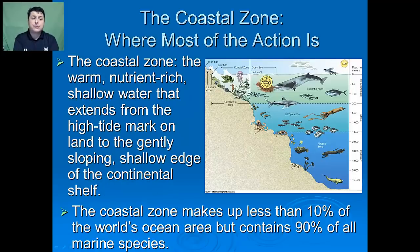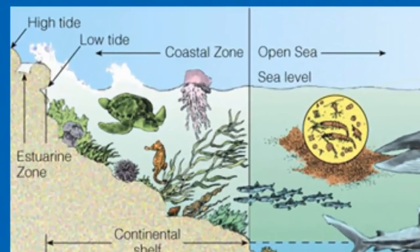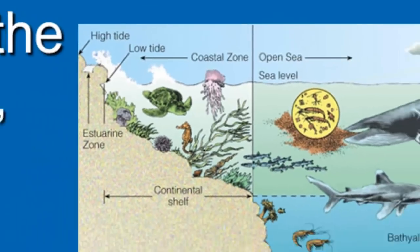The coastal zone is the warm, nutrient-rich shallow water that extends from the high-tide mark on land to the gently sloping shallow edge of the continental shelf. While the coastal zone makes up less than 10% of all the world's ocean area, it actually contains 90% of all marine species. This is due to the fact it's a very productive area, able to access ample sunlight and receiving plant nutrients directly from the land.